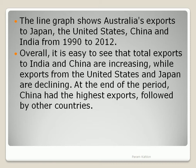Overall, it is easy to see that the total exports to India and China are increasing, while exports from US and Japan are declining. At the end of the period, China had the highest export followed by the other countries.